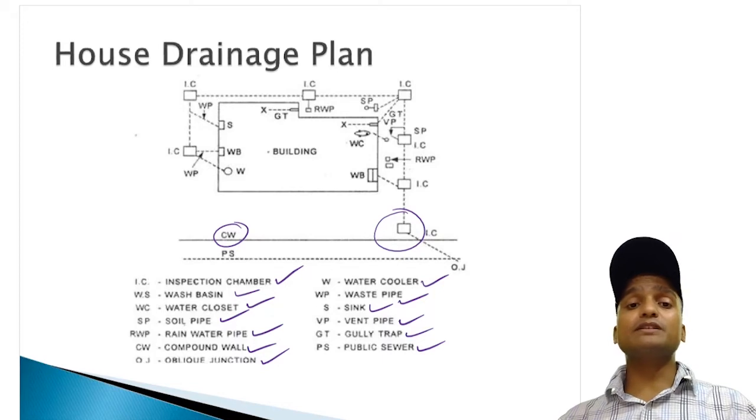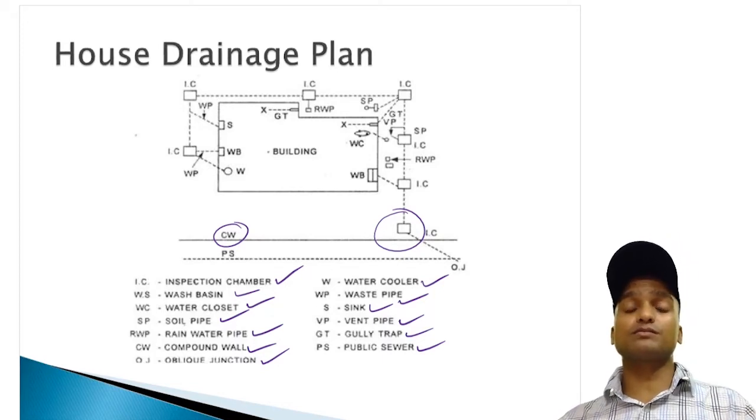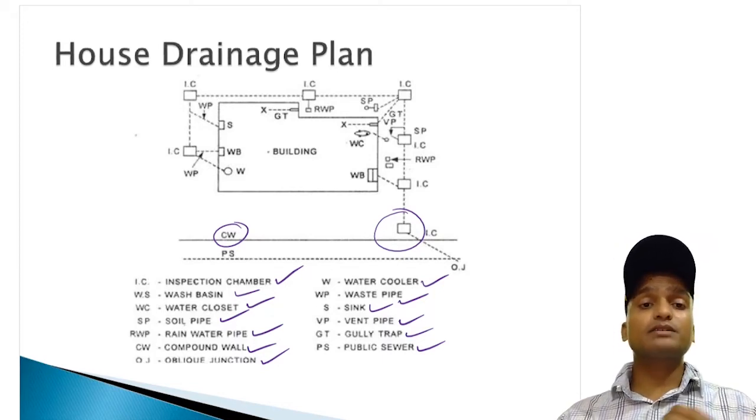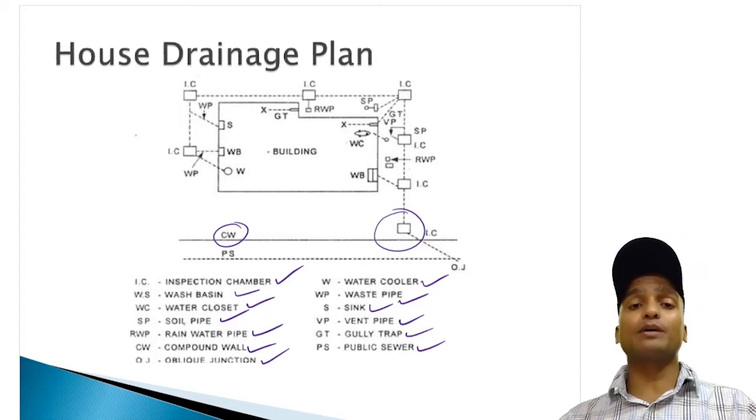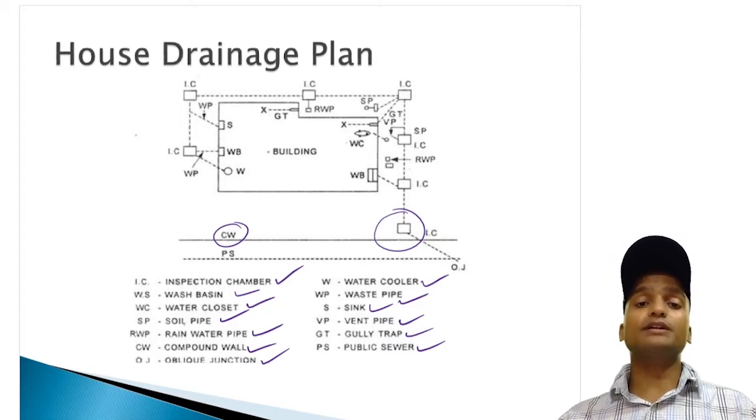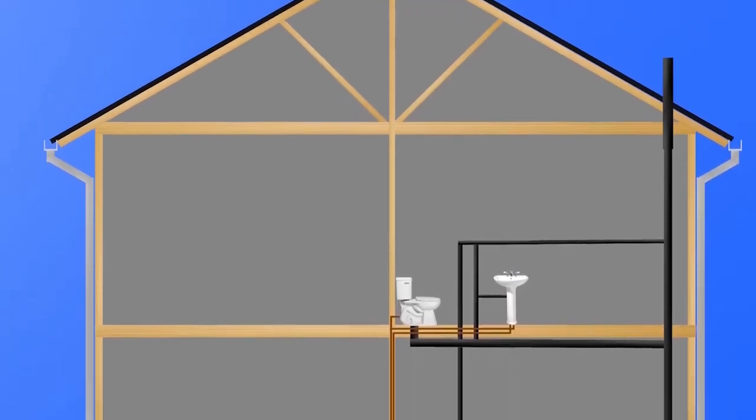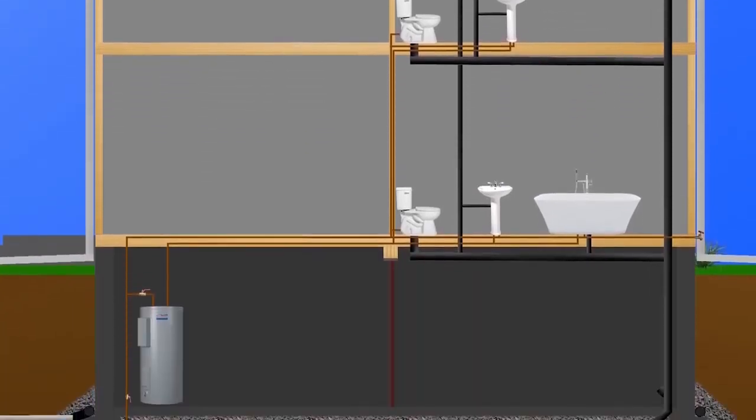On the basis of plan, we decide which type of pipe we are going to use, which type of fitting I have to buy, which type of trap I have to provide at different places. All these things are very important just like you can see in this video. Everything is explained here.